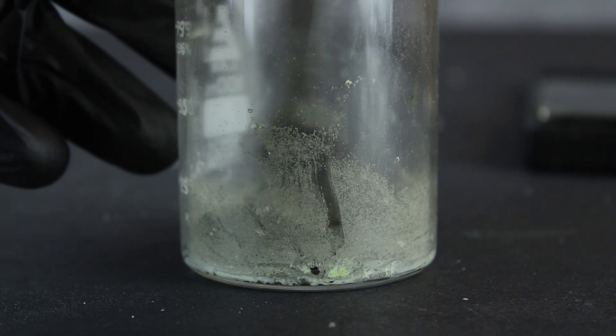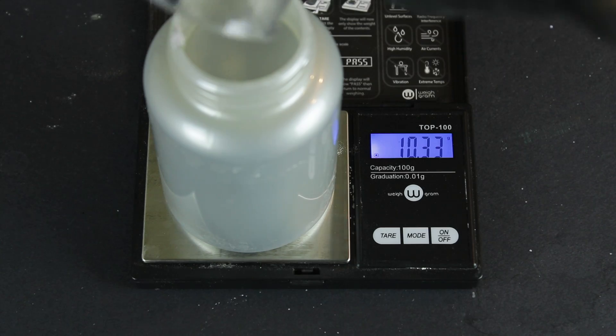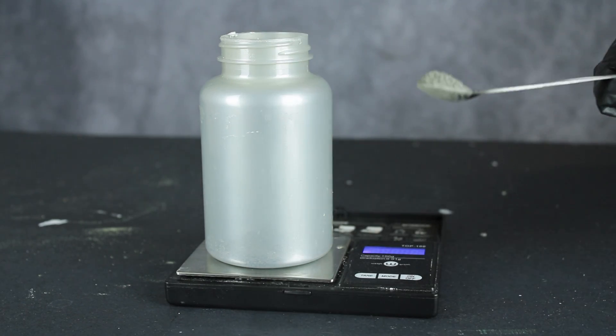Then I used a metal spatula to break up the solid mass, which I crushed up into a powder and weighed. In total, I obtained 10.45 grams of phosphorus pentasulfide. I tried burning some off camera to ensure it wasn't just sulfur, and the bright green flame and white smoke definitely told me there was phosphorus present.